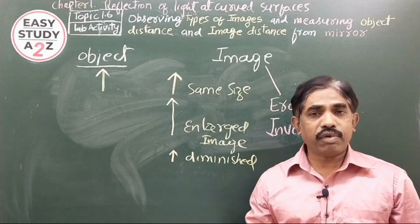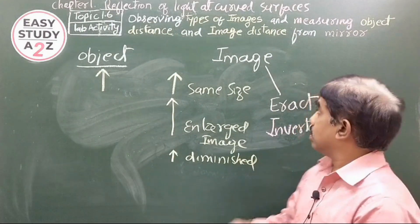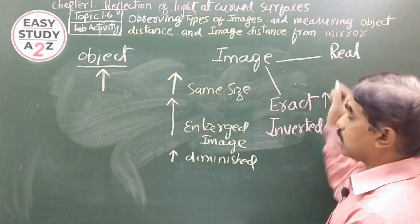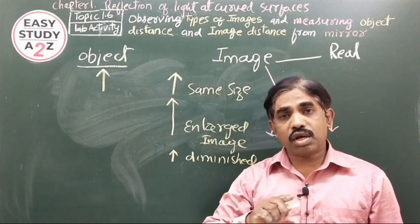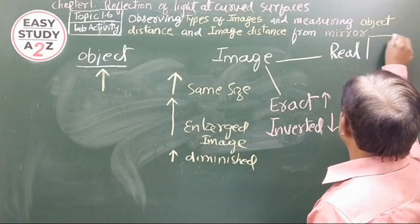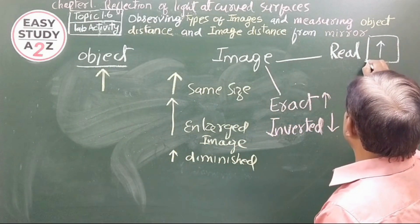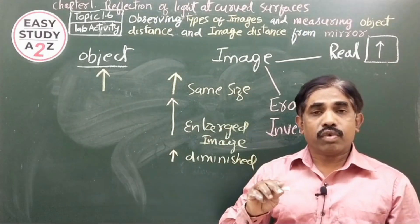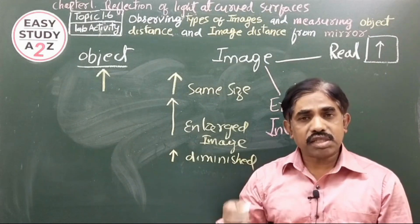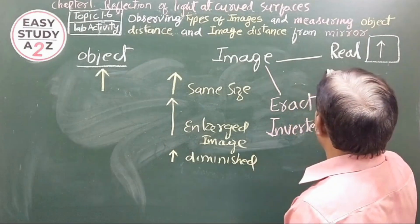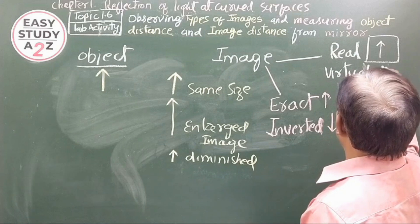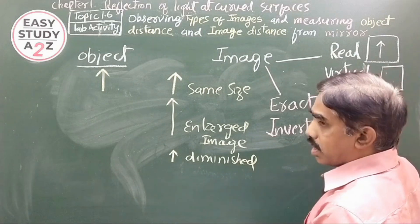We also have another type of image called a real image. If we are able to catch the image on a screen, we call it a real image. Some images we cannot obtain on the screen — such images are known as virtual, meaning not real. A virtual image cannot be projected onto a screen.